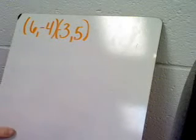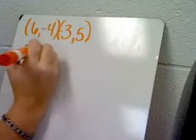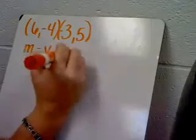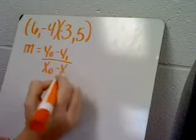We can find the slope from these two points using the slope formula. m equals y0 minus y1 over x0 minus x1.